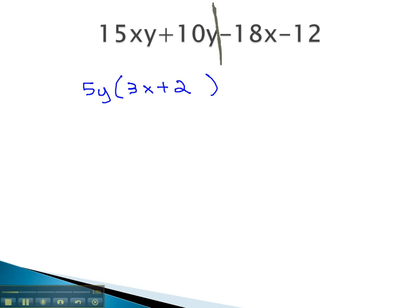On the right side, we see there's a common factor of negative 6. Notice we said the common factor was negative if the first term had a negative sign. Keep the sign with the first term. Factoring out negative 6 will leave us with 3x plus 2. Notice when we've done this, we end up with a binomial GCF that matches on both parts.